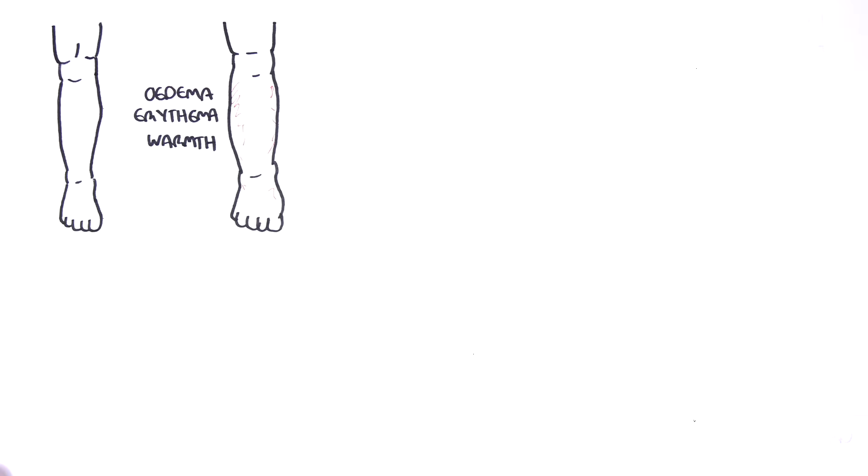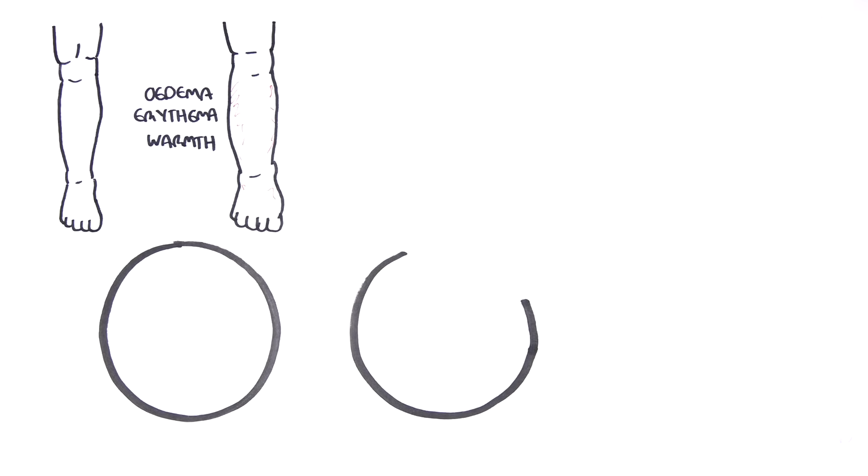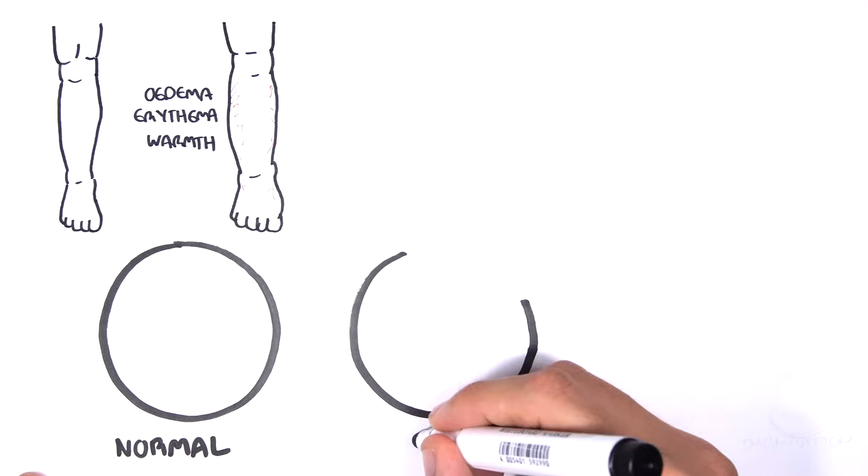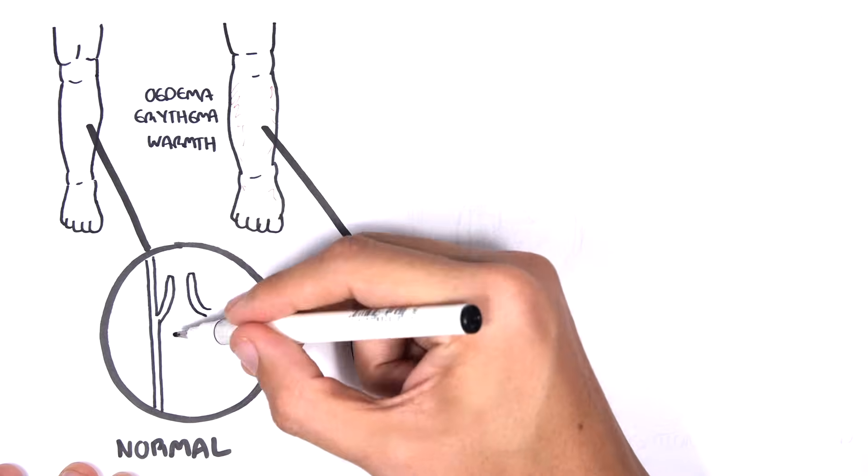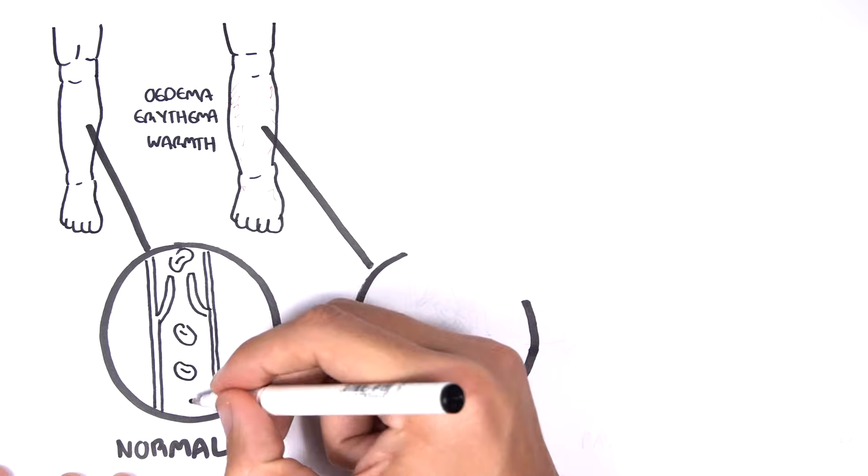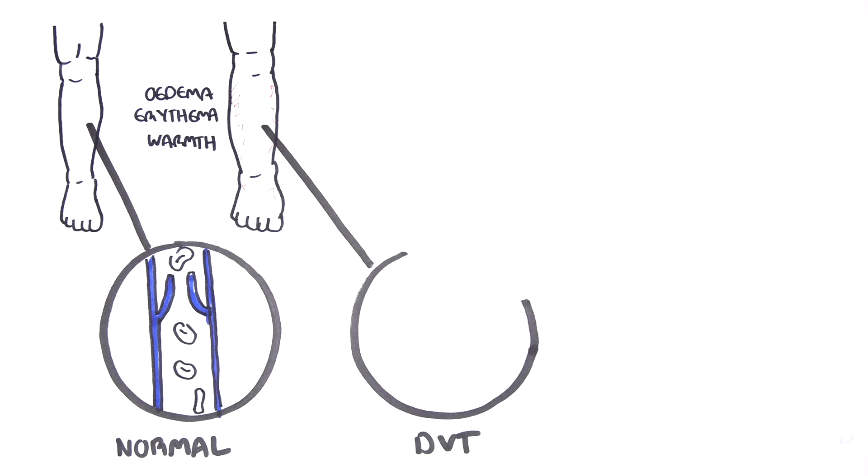So deep vein thrombosis, as the name implies, means thrombus forming within the deep veins. So let's look at a normal vein of the legs here. A normal vein of the legs have valves, which assist in the hemodynamics of the veins and helps return blood back to the heart by preventing backflow.